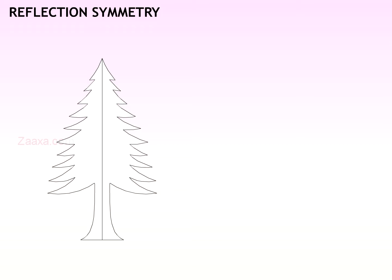Reflection symmetry is easy to recognize because one half is the mirror image or reflection of the other half. When folding along a line, one half of the image exactly matches the other half.